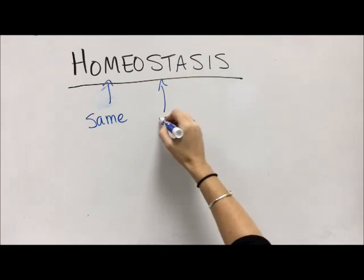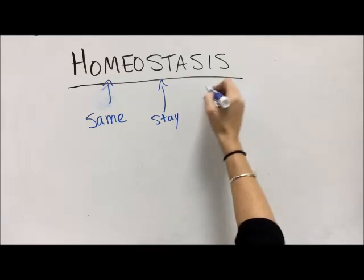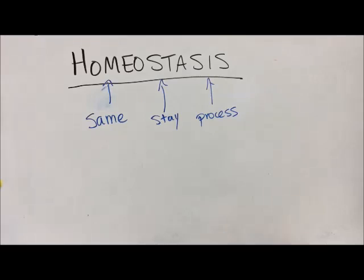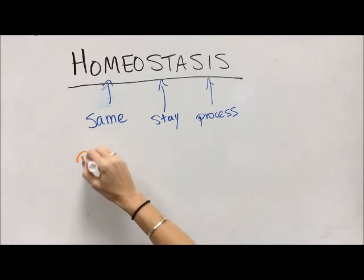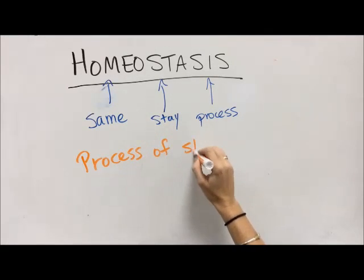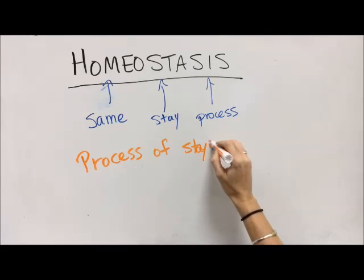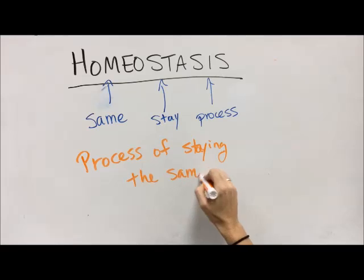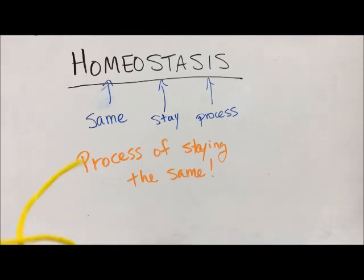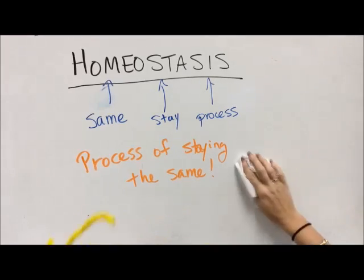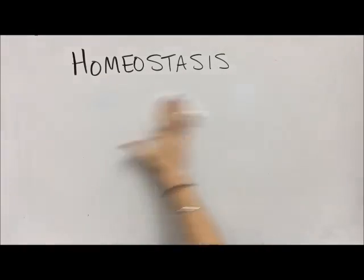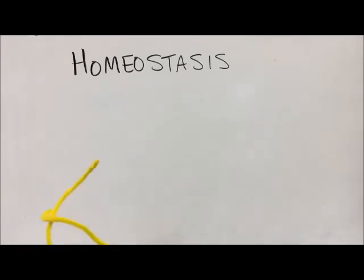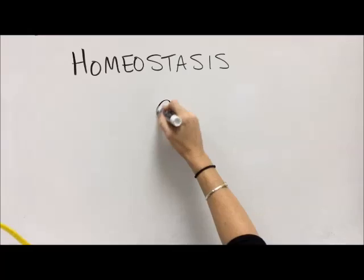Homeostasis is one of those things that's always really confounding to students. The word parts: 'homeo' means same, 'stasis' means stay, and '-sis' is process. So the word homeostasis literally means the process of staying the same. It's very important that animals are able to maintain their internal environments regardless of what their external environment does.